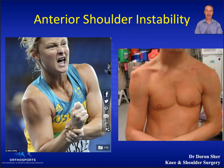There is a spectrum from laxity to instability, and some people can be lax or loose without symptoms of instability, while others can have subtle instability but quite severe symptoms. You can also get atraumatic instability with repetitive microtrauma, as is the case with overhead shoulder athletes and overhead laborers.